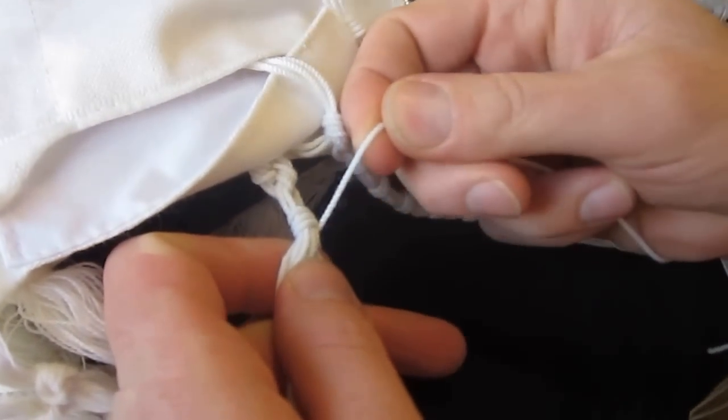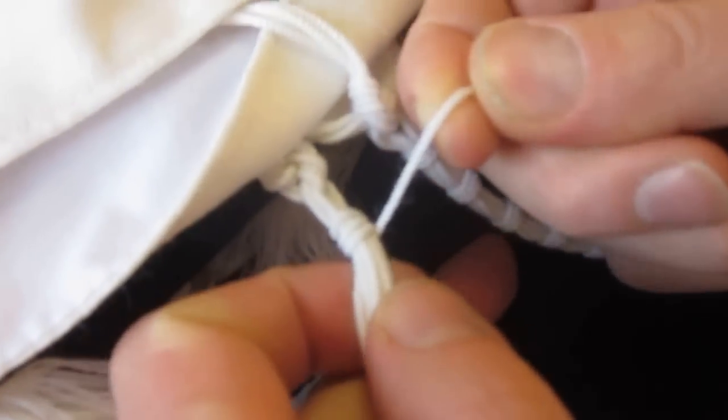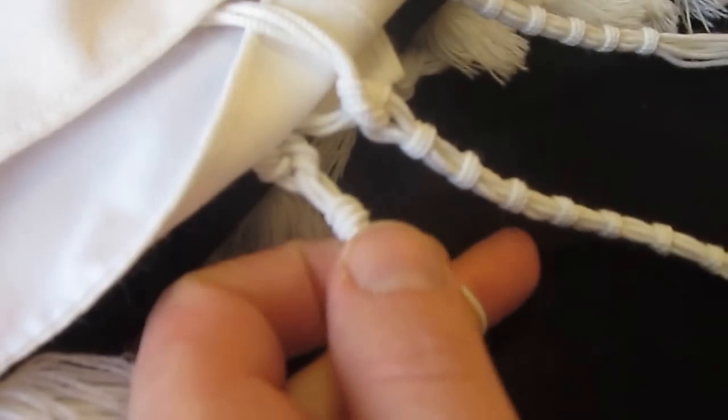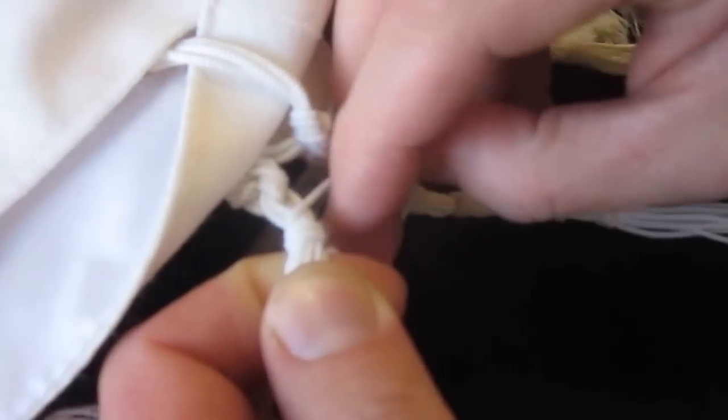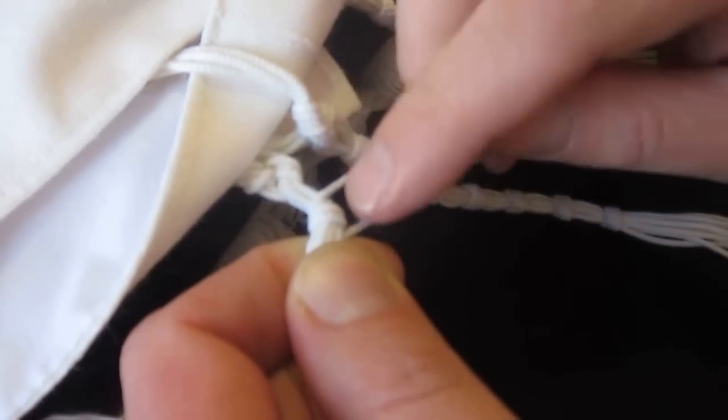However it comes out is fine. You take your string, which is called the shamash, you lay it down with everyone else, with all the other seven strings, hold it all together. Now you take this loop, and you take the bottom part, this part, not this part, this part,